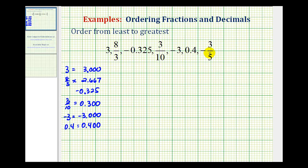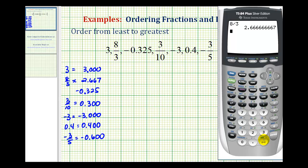And the last number is negative three-fifths. Well, negative three divided by five is going to be negative 0.6, or negative 0.600. Let's go and just check this. Negative three divided by five. And there it is.